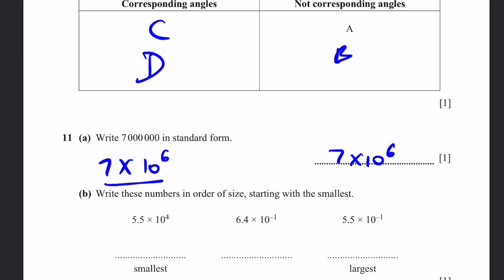B. Write these numbers in order of size, starting with the smallest. The smallest is going to be the one which has the least power of 10. So, 6.4 times 10 to the power of minus 1 and 5.5 times 10 to the power of minus 1. Both have 10 to the power of minus 1 in them. Which one is smaller? Of course, now we compare the numbers themselves. 5.5 is less than 6.4. So, of course, 5.5 times 10 to the power of minus 1 is the smallest. Next comes 6.4 times 10 to the power of minus 1. The largest is 5.5 times 10 to the power of 4 since it's multiplied by a positive power of 10 rather than a negative.